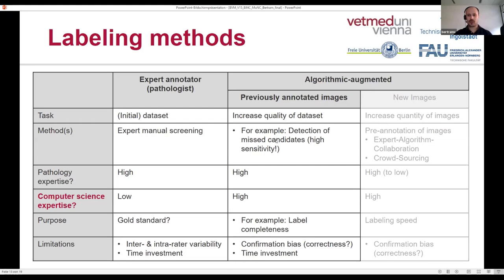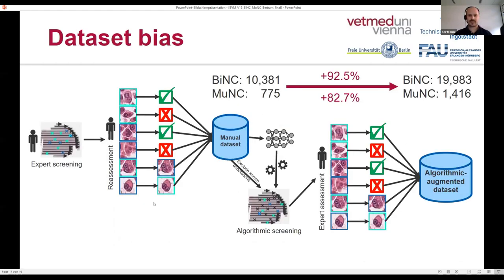In our present work, we used an algorithm to detect missed candidates as an example of the algorithmically augmented approach for increasing quality. Importantly, a bias can be introduced by this method that needs to be corrected or addressed appropriately. Looking at our dataset methods, we used two approaches: the manual approach and the algorithmically augmented approach. By adding the second step, there was an increase in the number of annotations by almost double, having a very high impact on training and testing of our models.